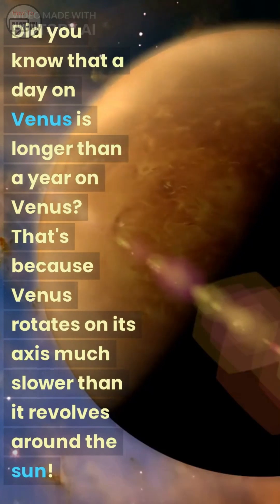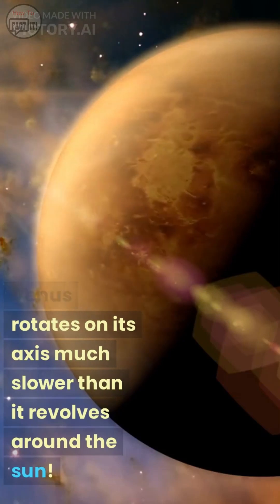Did you know that a day on Venus is longer than a year on Venus? That's because Venus rotates on its axis much slower than it revolves around the Sun.